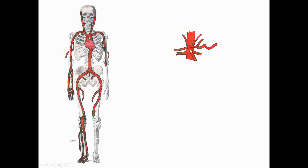Thereafter we have a superior mesenteric artery supplying blood to the midgut, as well as two renal arteries — one on the left and one on the right — traveling to each kidney. The thoracic aorta has transitioned to the abdominal aorta, and since there are no ribs in the abdomen, we have lumbar segmental arteries instead of intercostal arteries. Down here we can see the inferior mesenteric artery going to the hindgut — so three unpaired vessels going to the digestive tract.